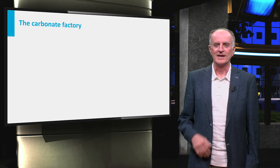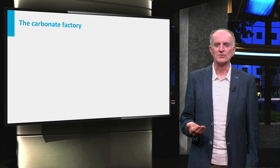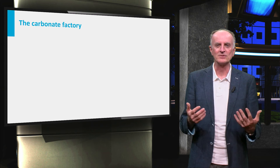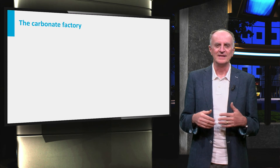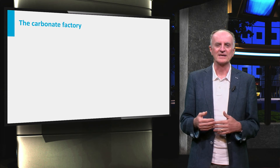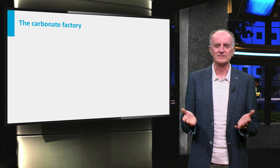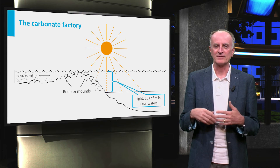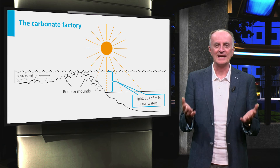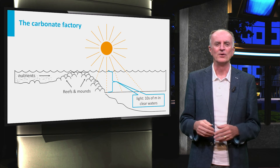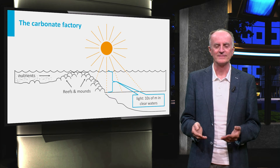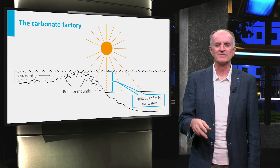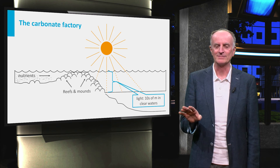By far the largest amount of carbonate is produced from seawater by organisms. Flourishing communities of plants and animals form the carbonate factory. The characteristics and efficiency of the factory are controlled by living conditions. Because photosynthesis conditions life for a large number of organisms, light is probably the most important control on skeletal precipitation. In clear waters, light can penetrate through several tens of meters, but muddy waters are not good for carbonates.